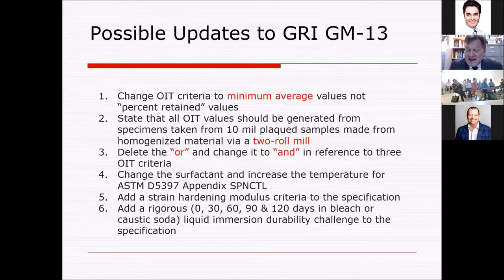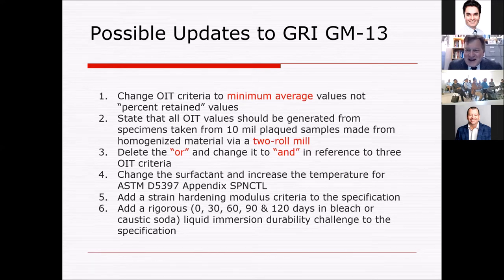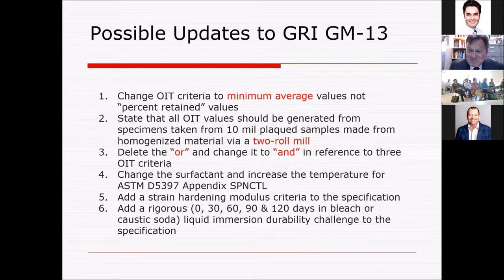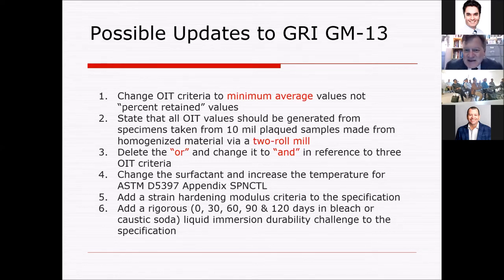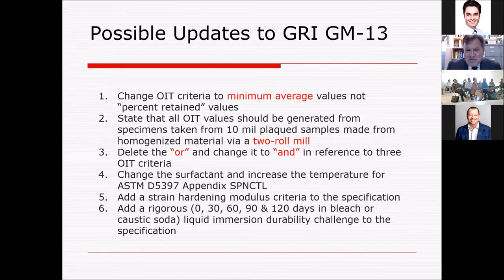I really think that GM13 has served the industry quite well. I was there in the beginning of it and know the sweat and blood that went into it — I have never been in a room where something was agreed upon in a consensus document where emotions were so high. I offer up these six changes, but I guarantee none of them. First: follow Eric's lead — change OIT criteria to a minimum average. Yes, it's a minimum average. If ASTM D8117 goes through, it'll be three OIT tests, and get away from that percent retained value. This would benefit tremendously materials that blow away the specification. If you're far in excess of it, you're penalized handily.